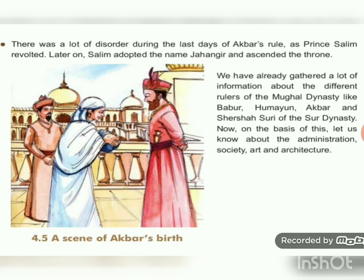We have now gathered information about the different rulers of the Mughal dynasty — Babar, Humayun, Akbar, and Sher Shah Suri of the Sur dynasty. On the basis of this, let us now learn about the administration, society, art, and architecture.